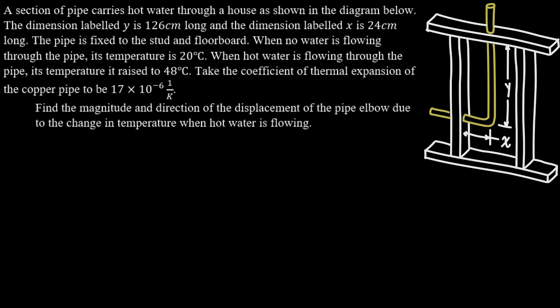So let's start with our equation: change in length equals initial length times alpha times change in temperature. And we can just replace that change in length with change in x and initial length with x that we have on the diagram.